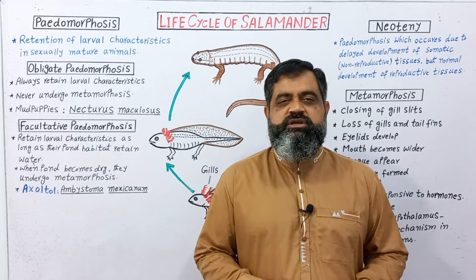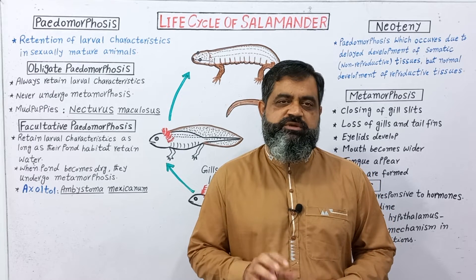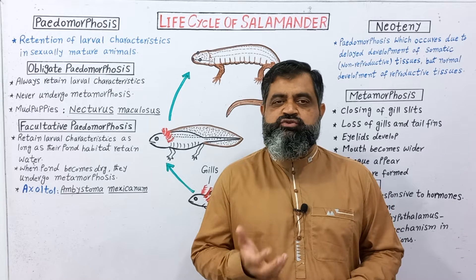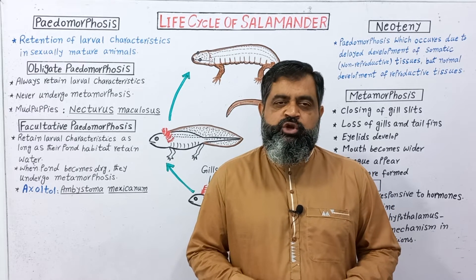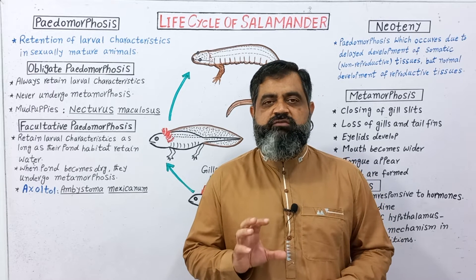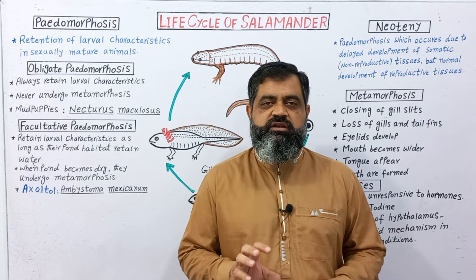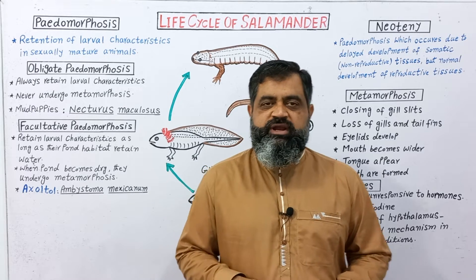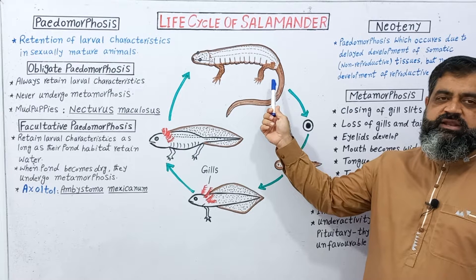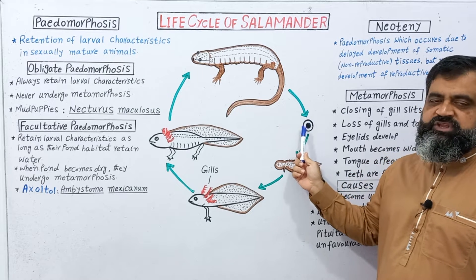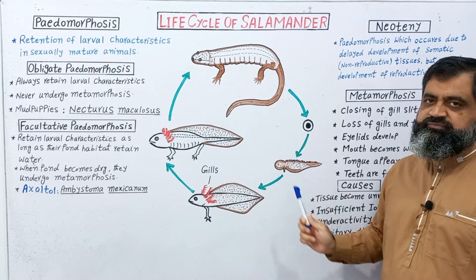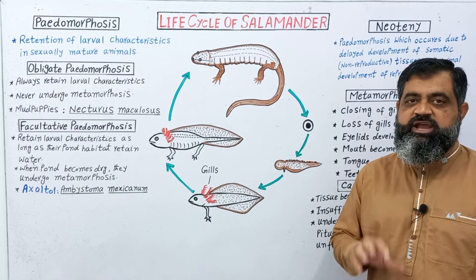Pedomorphosis is a condition which usually takes place in amphibians, and especially in salamanders, which are also known as newts. To understand the concept of Pedomorphosis, first we have to look at the life cycle of a salamander. Usually the female salamander lays an egg, which after fertilization develops into larvae, and this usually happens in an aquatic environment.